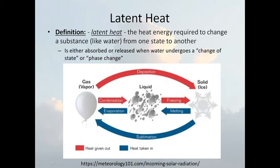Once an air parcel becomes a cloud and moves above the freezing level, temperatures drop and the water will freeze — so the gas went from gas to liquid to solid. Then just reverse the order: an ice crystal thaws when it hits a warmer layer, melts to a liquid, and either evaporates before it hits the ground or falls as a raindrop. The other step is going from gas directly to a solid — that's deposition.